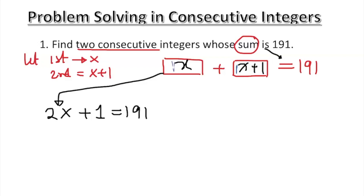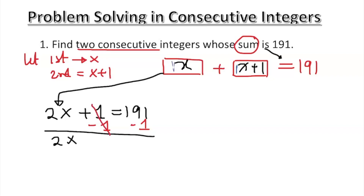Then we do minus one on both sides. We do minus one because the one is positive, so we must cancel it out. That gives us two x on the left, and the one is gone.